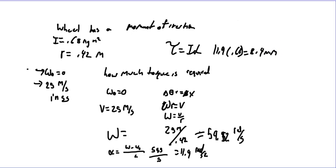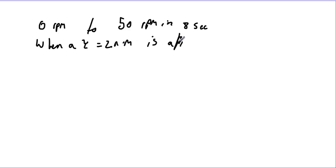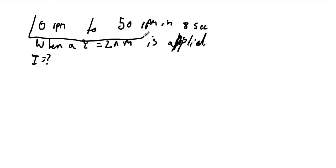When you have linear and angular quantities mixed, make sure you use the relationship between them. One more example: something goes from 0 RPM to 50 RPM in 8 seconds when a torque of 2 newton-meters is applied. We want to find the moment of inertia. With RPM you have to be careful — 0 RPM is 0 radians per second, but 50 RPM must be converted.